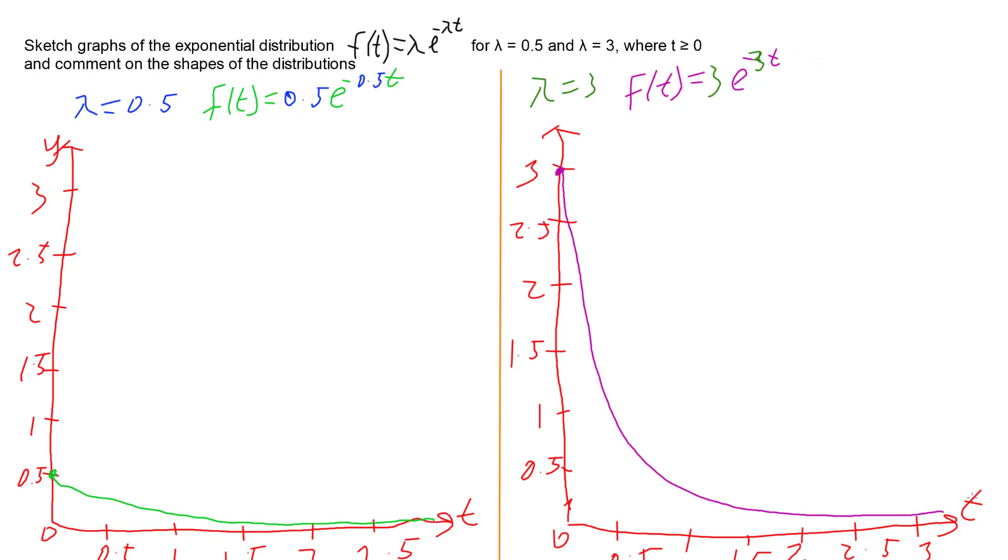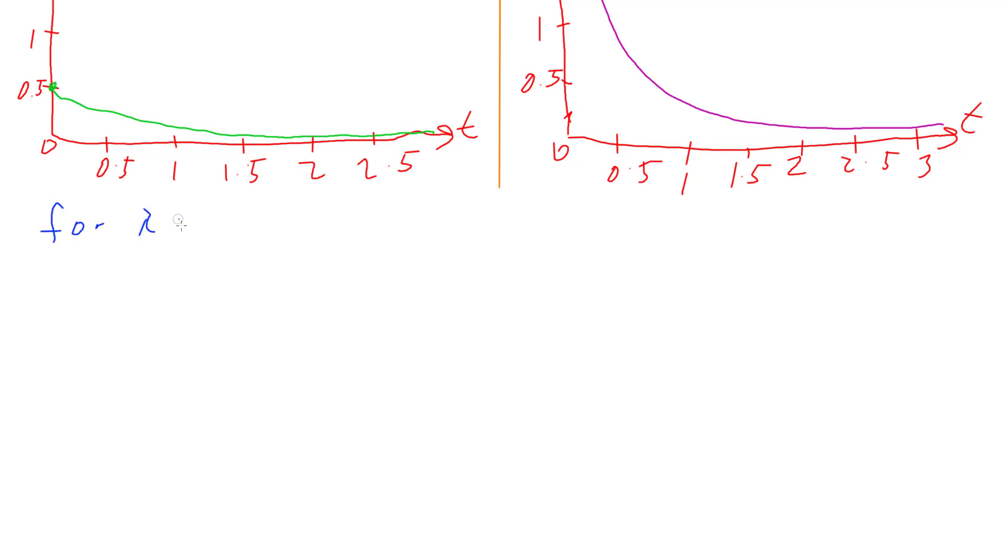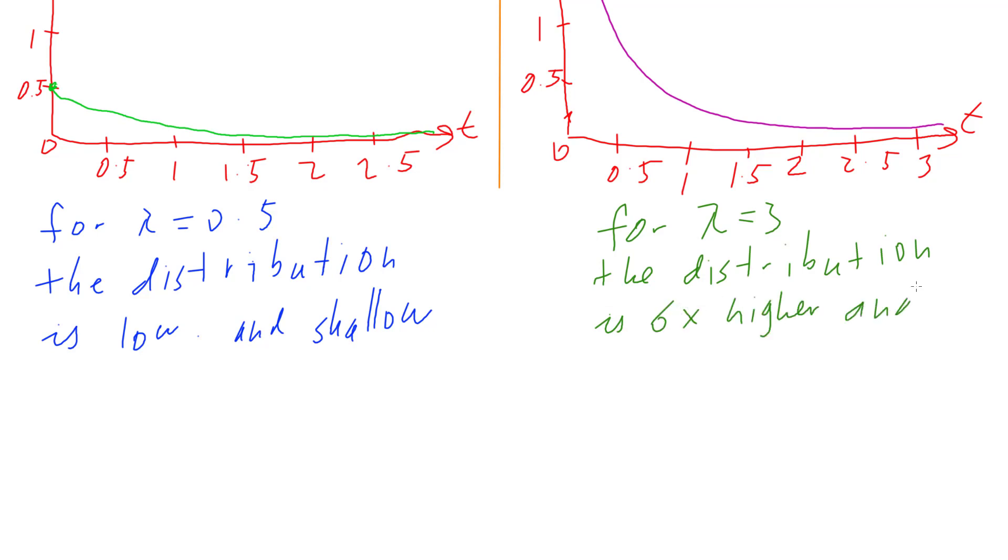So if we compare these two shapes and think about what the exponential distribution means, we can start making a justification. For the lambda equals 0.5, we're a lot flatter, a lot shallower. And generally, it's more spaced out. Whereas when we have lambda equals 3, we're a lot higher at the lower end, and we drop down really quickly to that exponential. And that's what we talk about when comparing these two graphs. If I compare these two graphs, for lambda equals 0.5, the distribution is low and shallow, more spread out. For lambda equals 3, the distribution is 6 times higher and steeper.